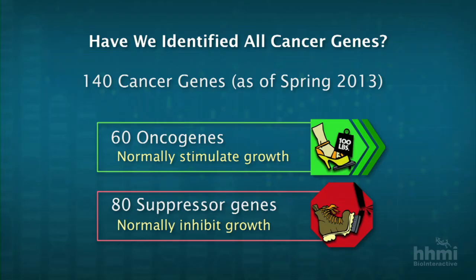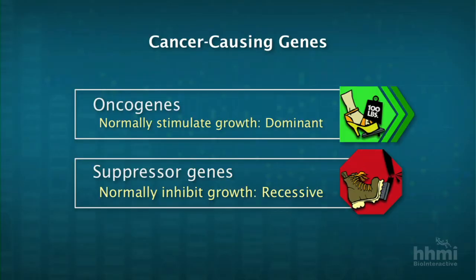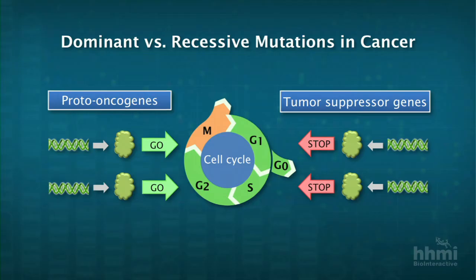Some cancer genes are oncogenes that, when mutated, now function as accelerators driving cell growth inappropriately, whereas others — the tumor suppressor genes — normally function as brakes, but when broken or disabled, the cell cycle can proceed more quickly.